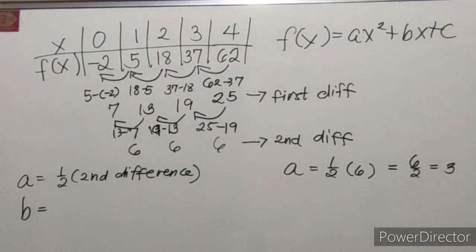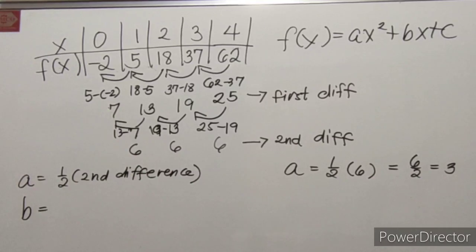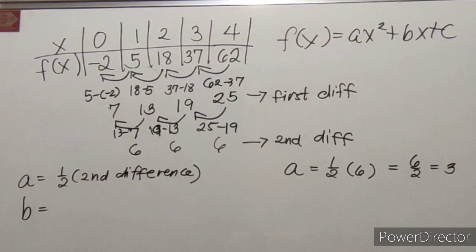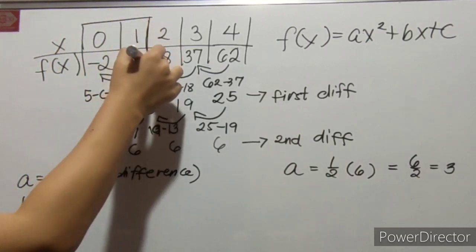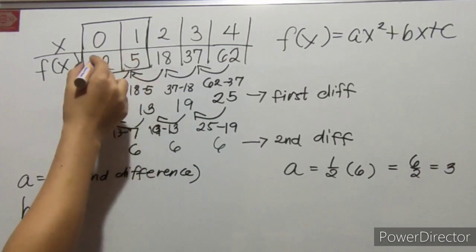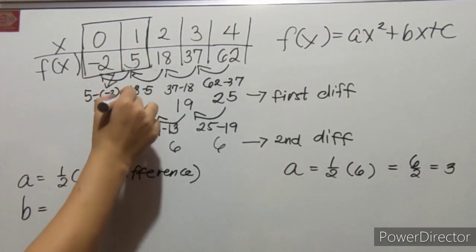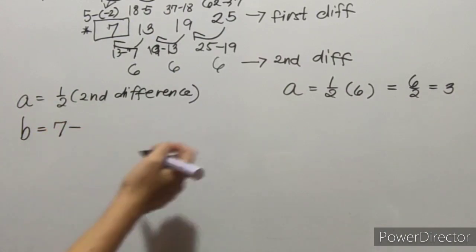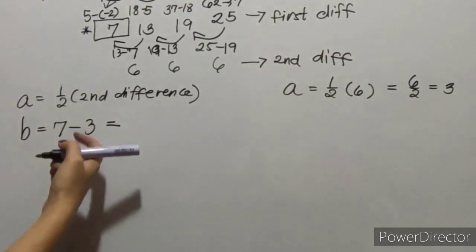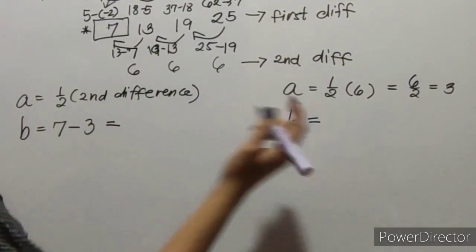Ito ay ang first difference between the x values. Again, the difference between the f of x whose values of x are between 0 and 1 respectively, minus the value of A. So, ito yung 0 and 1. Yung first difference, which is yung 5 minus negative 2, which will give us 7. So, babuwasan natin nung nakuha natin A, which will give us 7 minus 3 is 4.